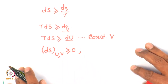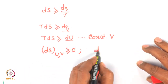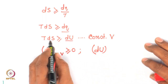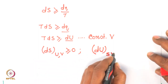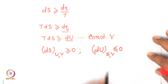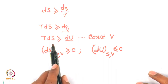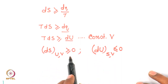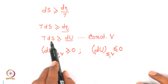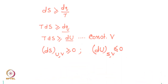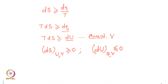So: dS at constant U and V ≥ 0, and dU at constant S and V ≤ 0. Please note that here we are only talking about the system — we have nowhere talked about the surroundings. That is why we call these criteria of spontaneity in terms of the properties of the system alone.